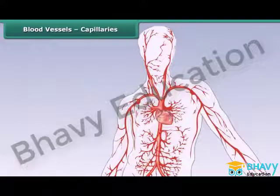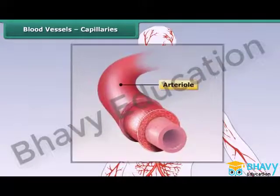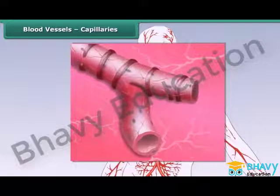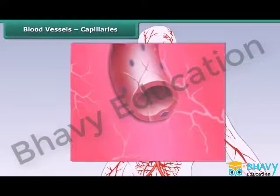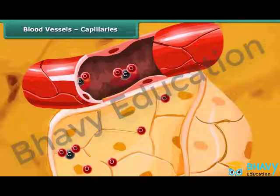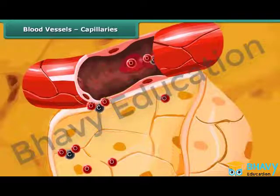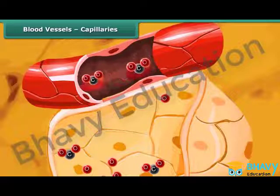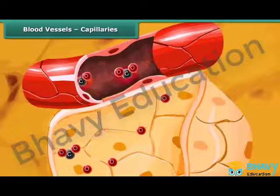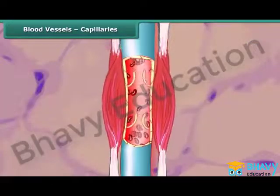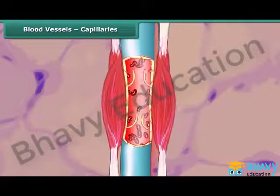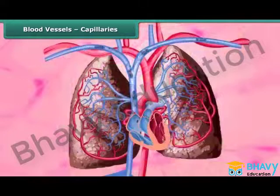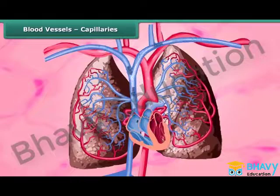Arteries branch into smaller blood vessels called arterioles, which further branch into capillaries. Capillaries are extremely thin blood vessels embedded in the tissues. They carry oxygenated blood from the arteries to the tissues. Oxygen in the RBCs and waste from the tissues are exchanged through capillary walls. The capillaries carrying deoxygenated blood join to form venules, which in turn join to form veins, carrying deoxygenated blood back to the heart.